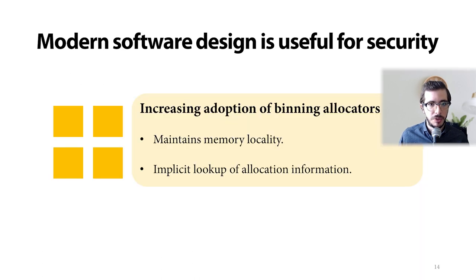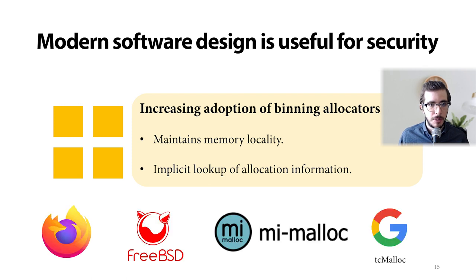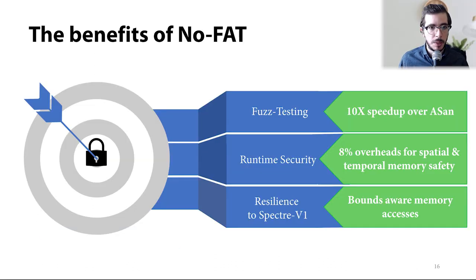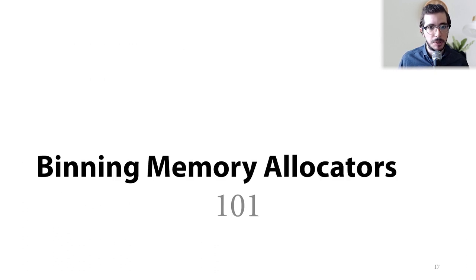Now, the key software design that we focus on is the increasing adoption of binning allocators. They are typically used to enhance performance by maintaining memory locality. Examples of binning memory allocators include JEMalloc, which is used in Firefox and in FreeBSD as a default allocator. There's also MIMalloc from Microsoft and TCMalloc from Google. In this work, we will show how making the hardware aware of binning memory allocator primitives can have multiple benefits. To name a few, it can be used to improve fuzzing, runtime security, and resilience to Spectre V1 attacks.